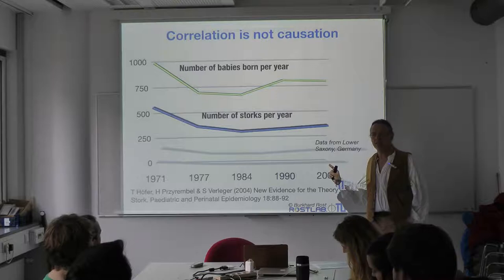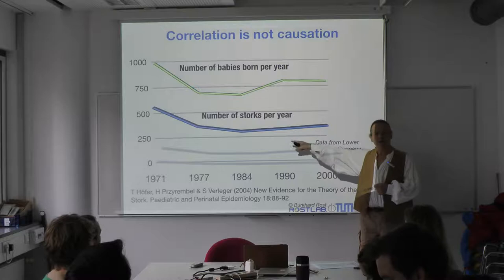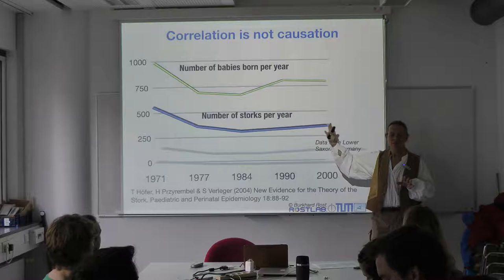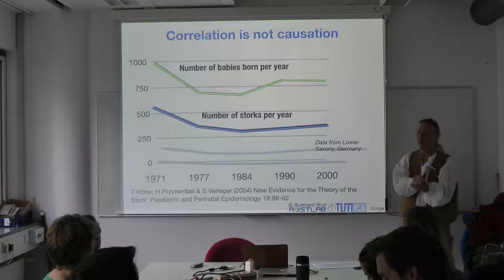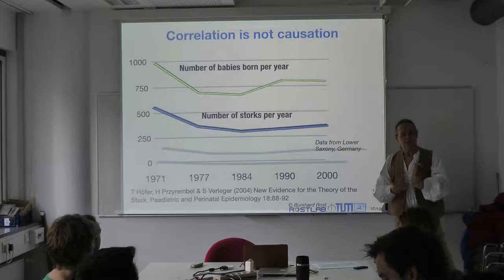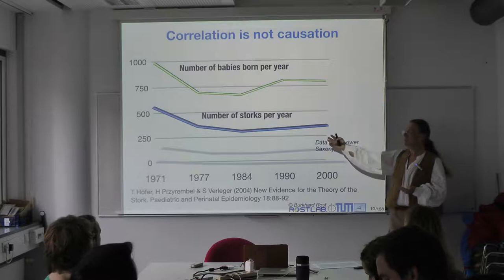And this is the danger of data. You have background knowledge that tells you these two things have nothing to do with each other, and that this is a random correlation. But if you just look at random numbers, this is a significant correlation. You take all of Germany and find one district where these numbers are correlated. But how do you know the data you're looking at were not chosen like that? You typically start with a hypothesis and then see whether the data supports it — and in this particular case, it would.